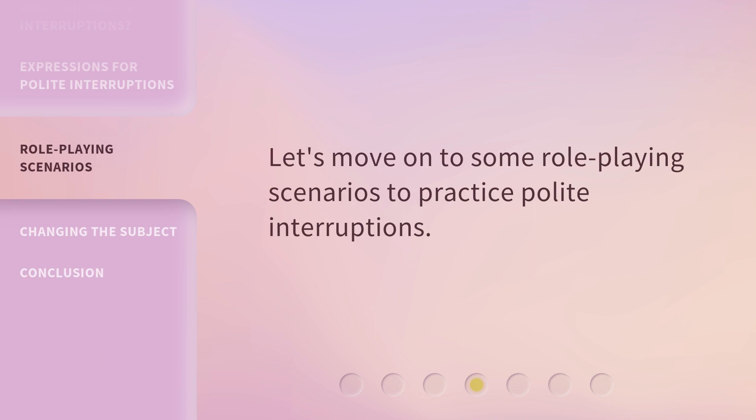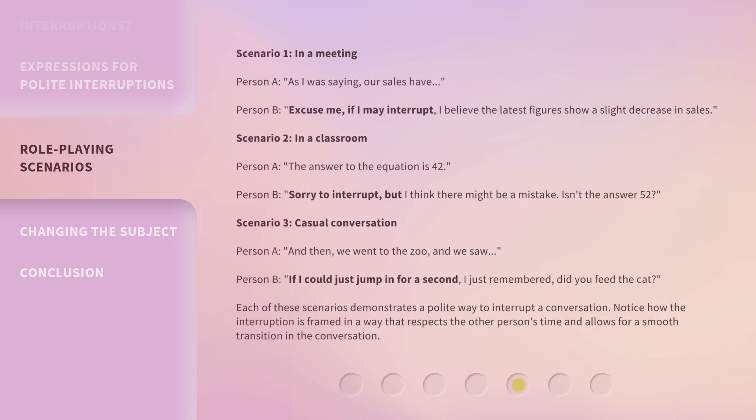Let's move on to some role-playing scenarios to practice polite interruptions. Scenario 1 — In a meeting: Person A: 'As I was saying, our sales have...' Person B: 'Excuse me, if I may interrupt. I believe the latest figures show a slight decrease in sales.' Scenario 2 — In a classroom: Person A: 'The answer to the equation is 42.' Person B: 'Sorry to interrupt, but I think there might be a mistake. Isn't the answer 52?'